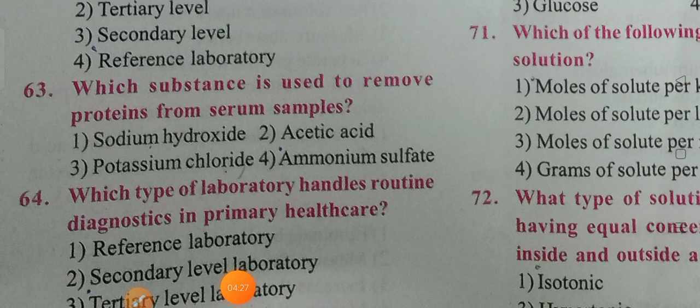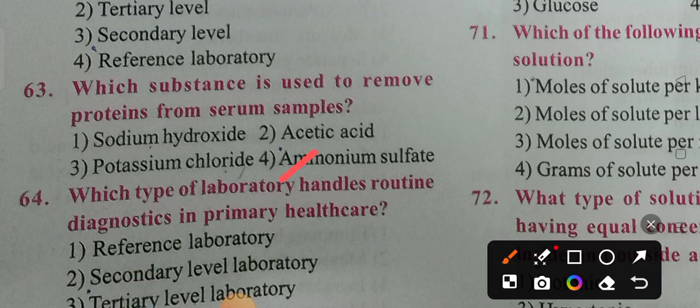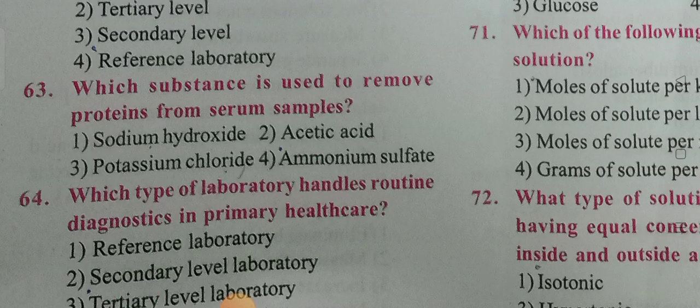Next question: Which substance is used to remove proteins from serum samples? Options include sodium hydroxide, acid, potassium chloride, and ammonium sulfate. Option 4 is the correct answer — ammonium sulfate.